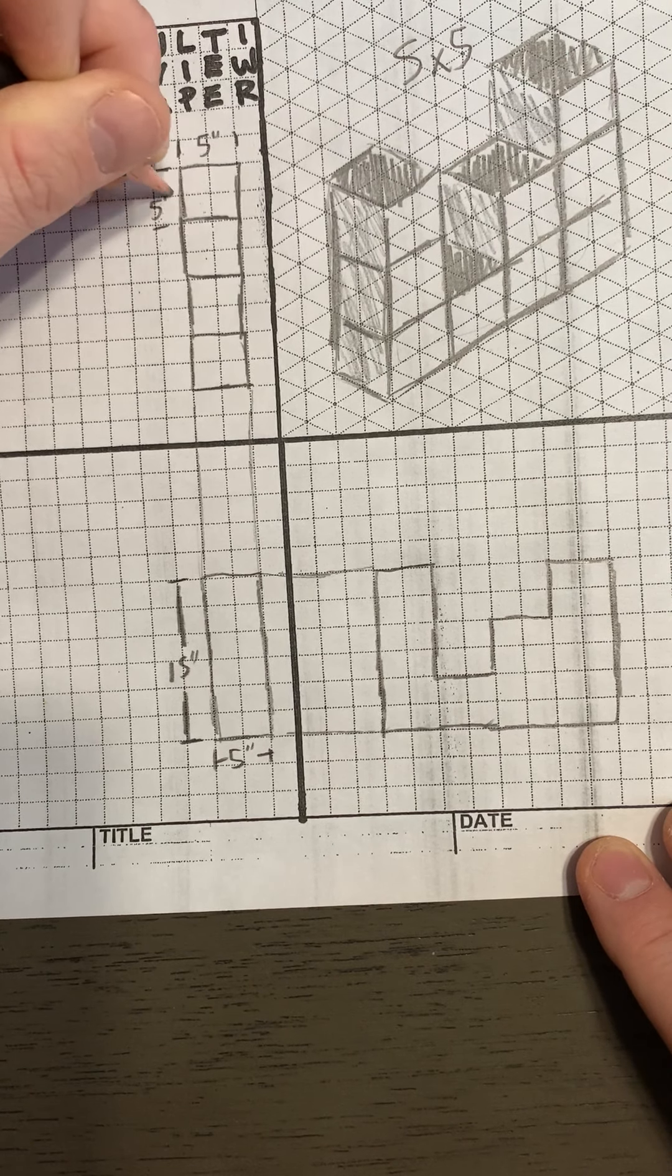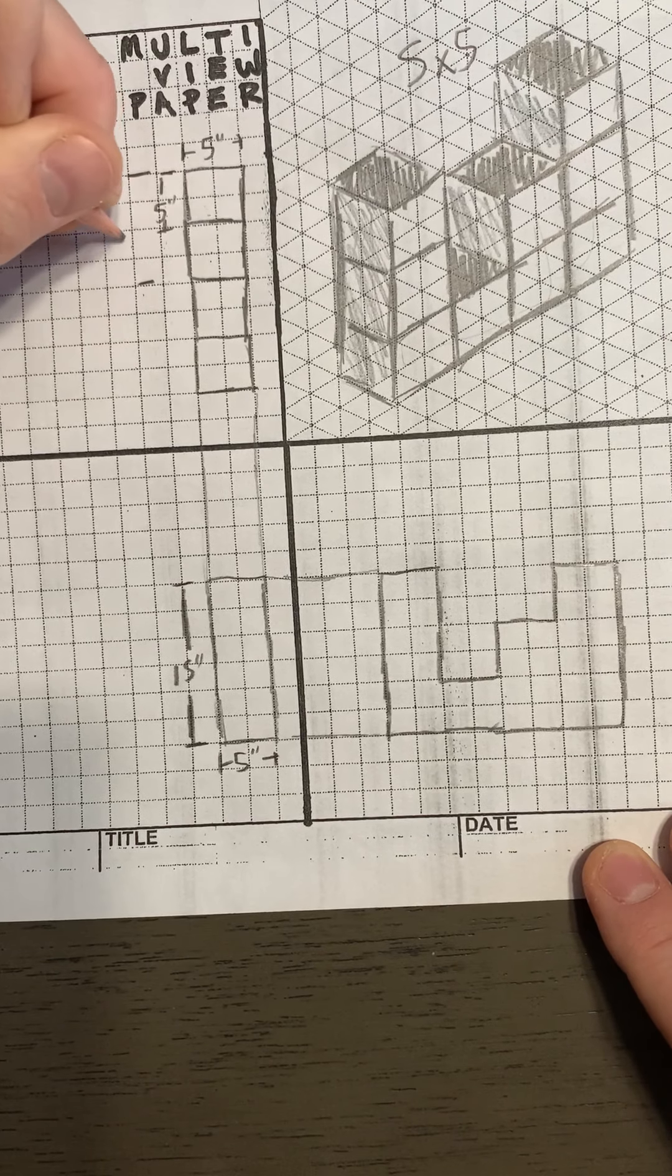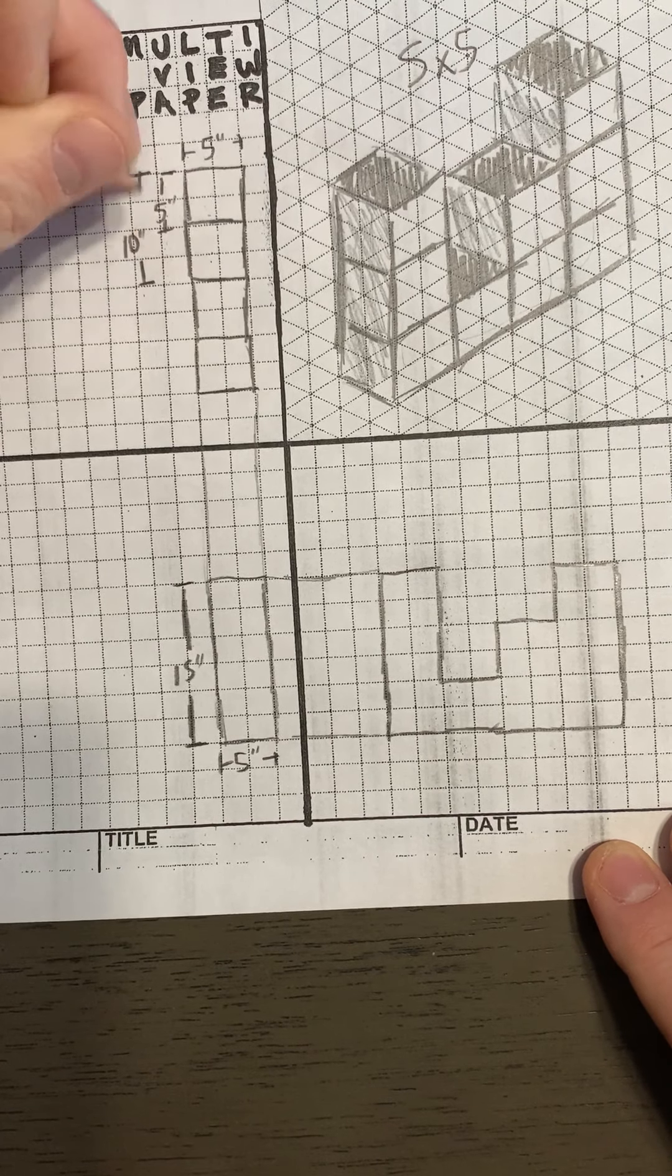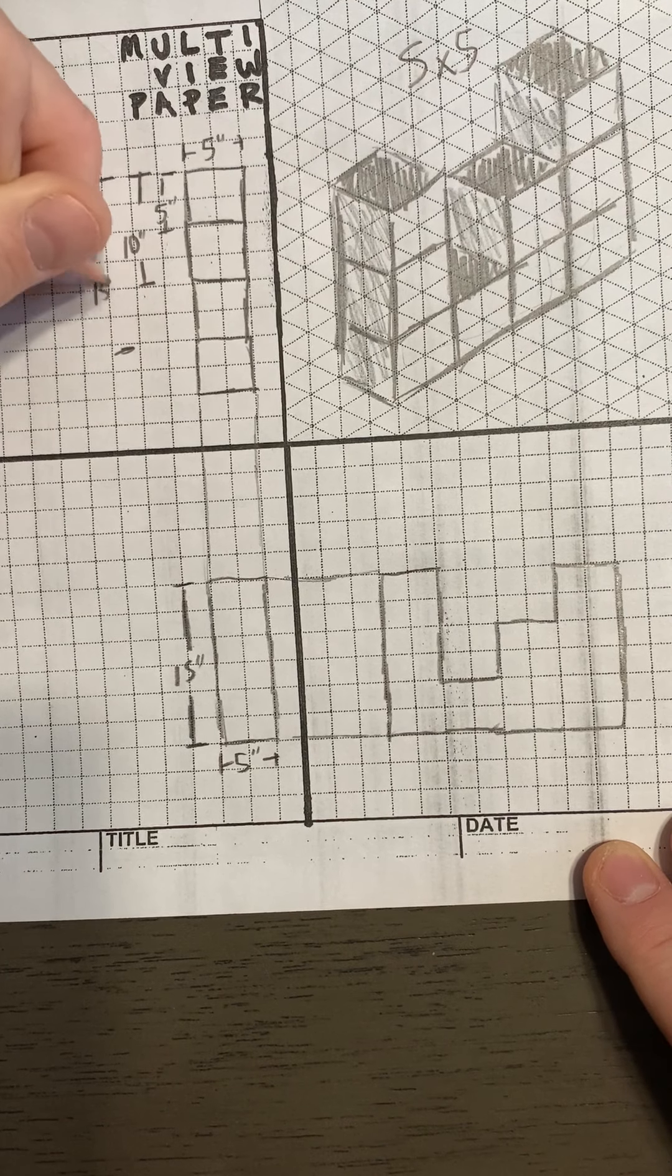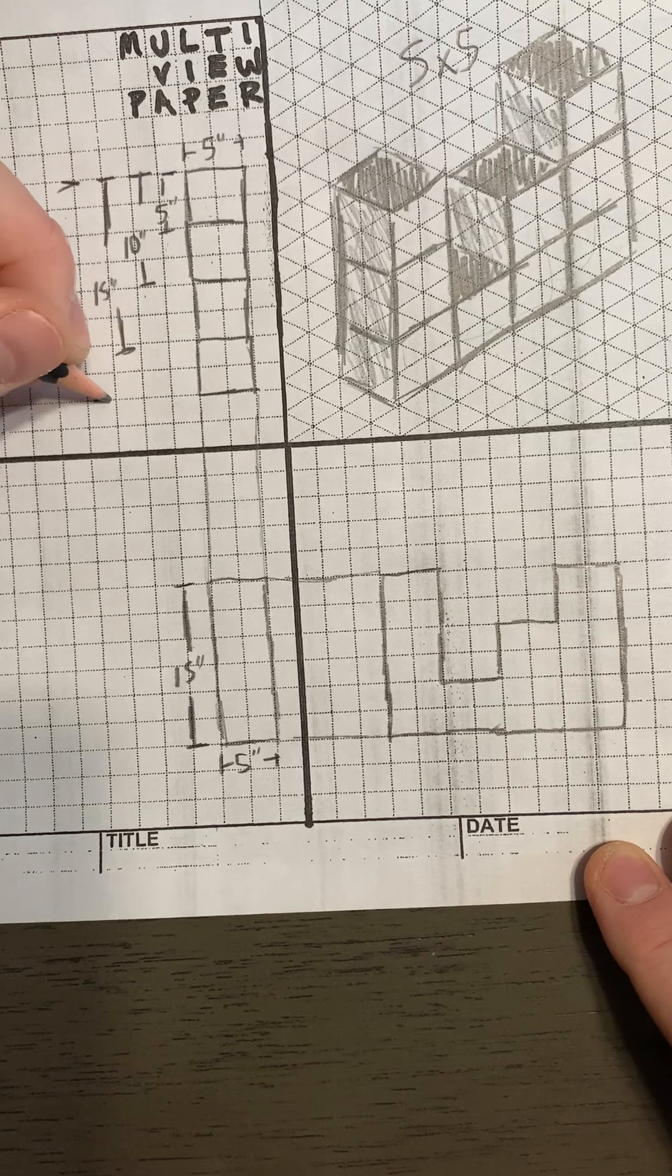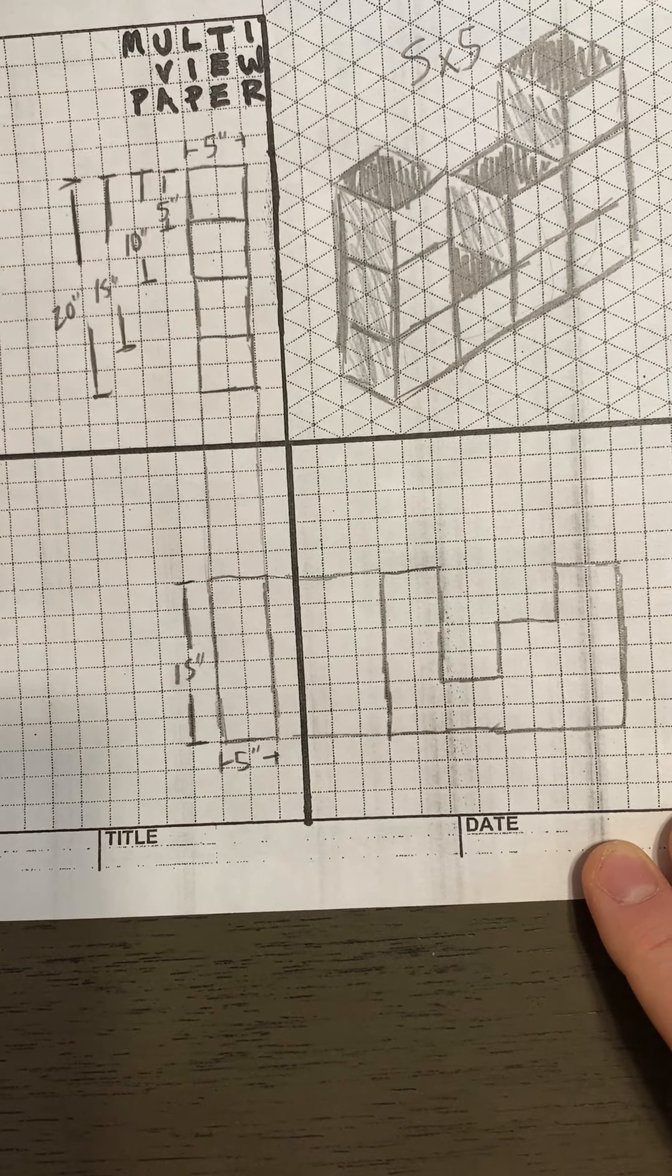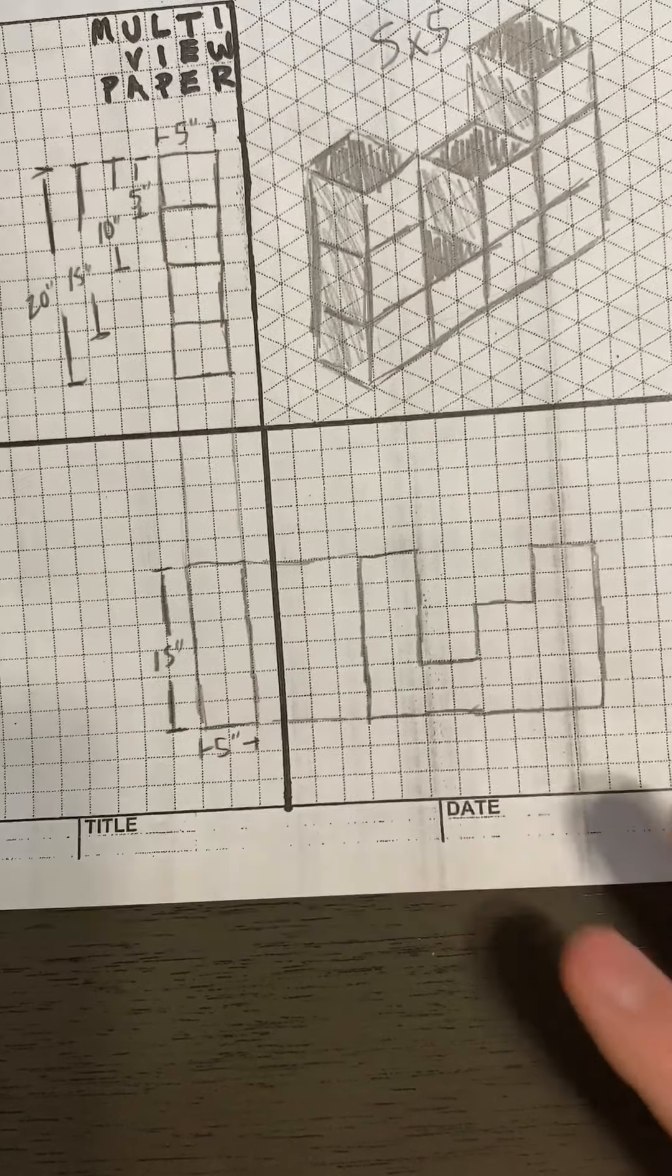Here to here is 5 inches. Here to here would be 10 inches. Here to here would be 15 inches, and then here to here would be 20 inches. All right, that's how you dimension, that's how you would do this one.